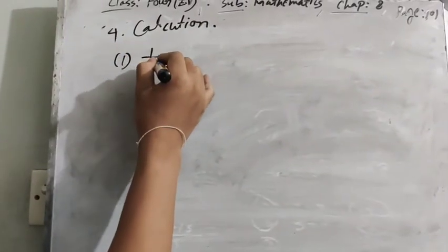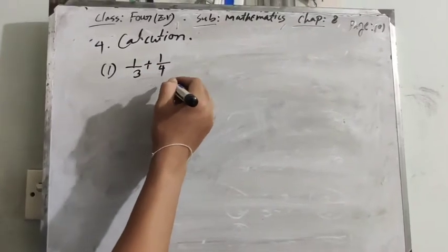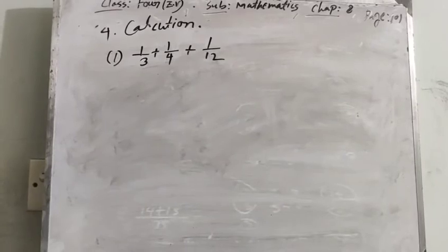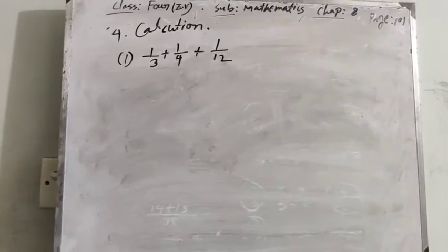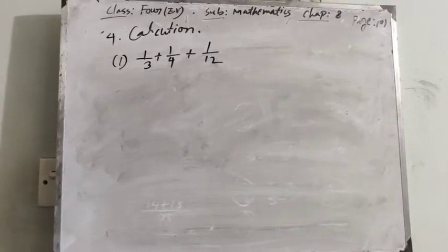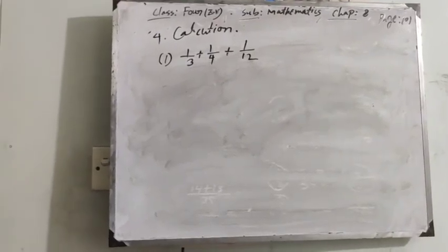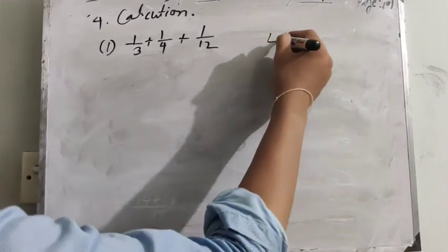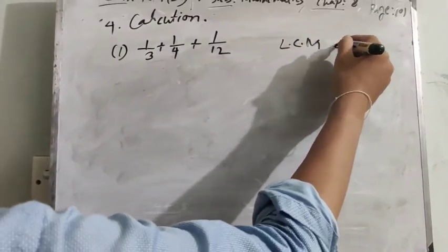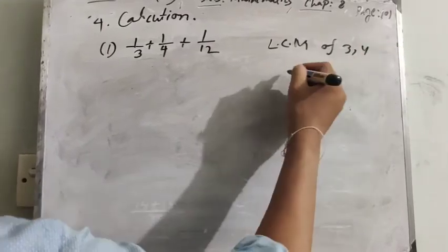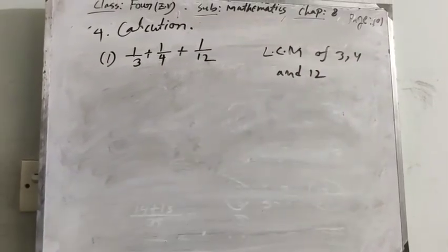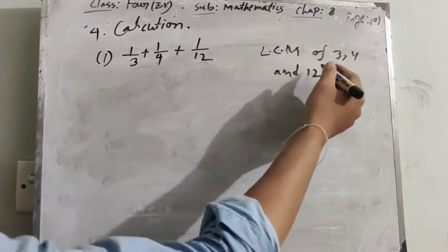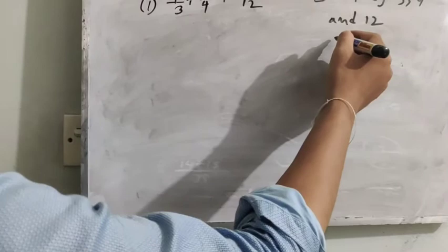Question number 4, number 1: 1/3 plus 1/4 plus 1/12. We have to find the addition of 3 fractions. First of all, we have to find the LCM. The least common multiple of 3, 4, and 12 is 12.